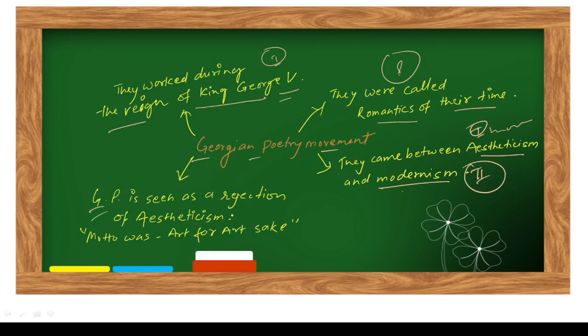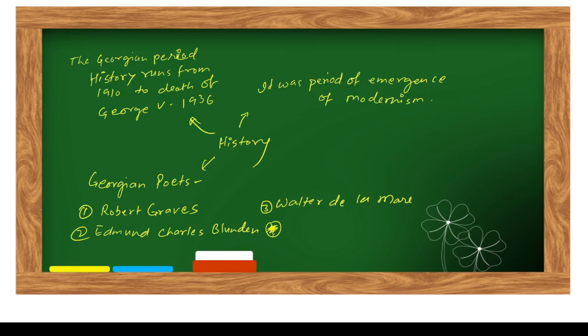Georgian poetry is seen as a rejection of aestheticism. As I told you in several videos, most movements in English literature are rejection or against some other movements. If you know the relation between two movements, you can remember it for longer period. Aestheticism had a motto - the motto was art for art's sake. It was just rejection and then Georgian poetry movement was created.